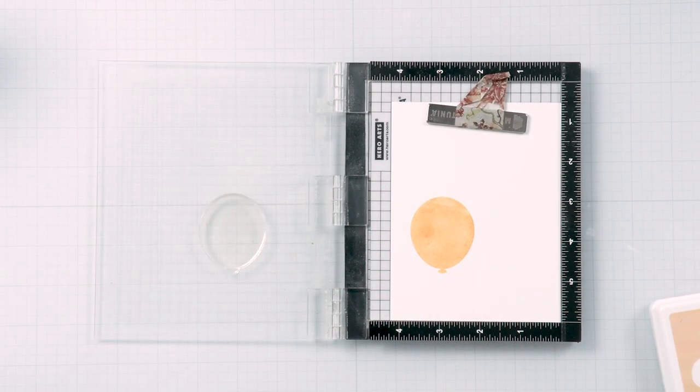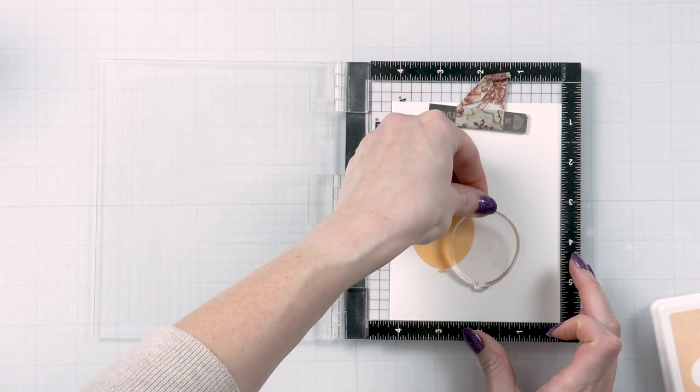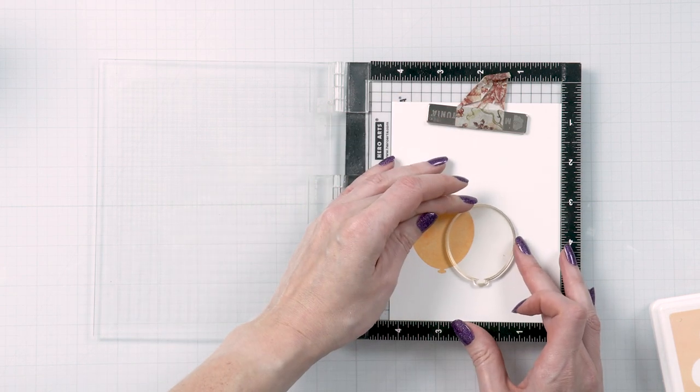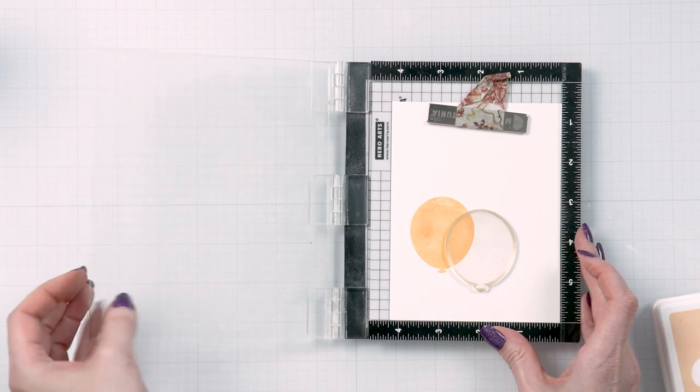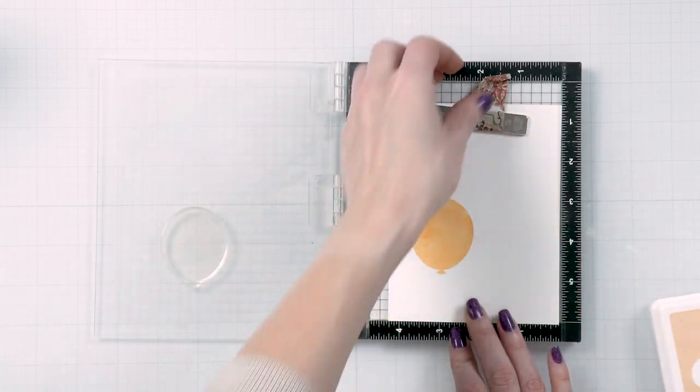Next, I cleaned the stamp using the stamp chamois and repositioned the balloon on my panel to stamp it. I wanted to overlap the images as much as possible to create the illusion of some balloons being placed in the foreground and some balloons in the background.